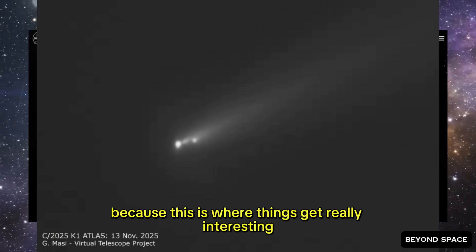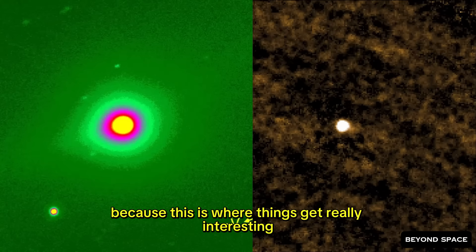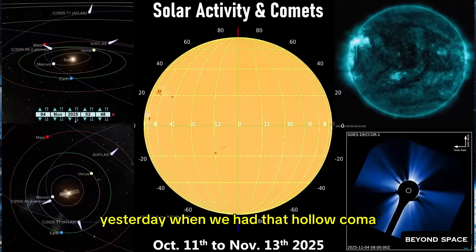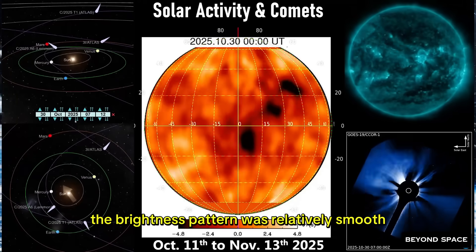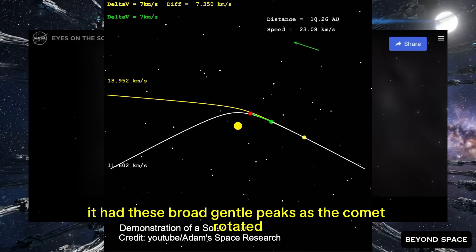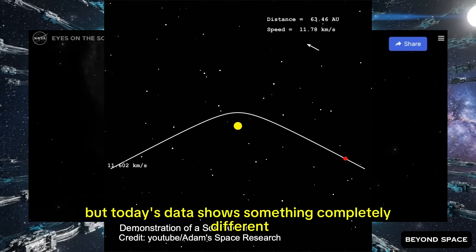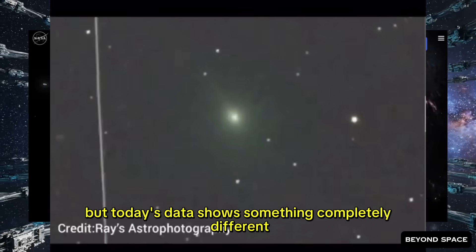Now let's talk about the light curve, because this is where things get really interesting from a physics standpoint. Yesterday, when we had that hollow coma, the brightness pattern was relatively smooth. It had these broad, gentle peaks as the comet rotated. Nothing too dramatic.